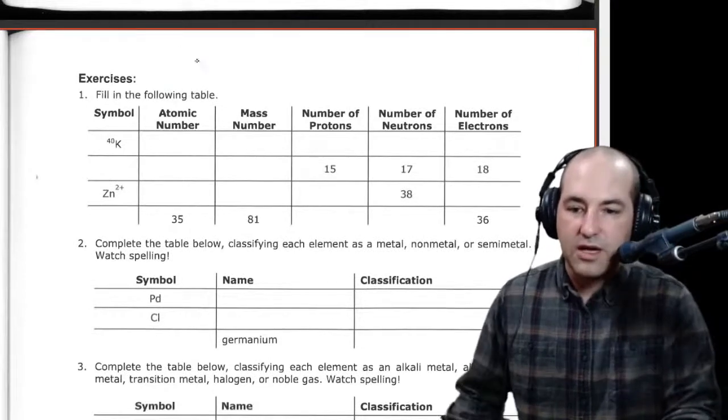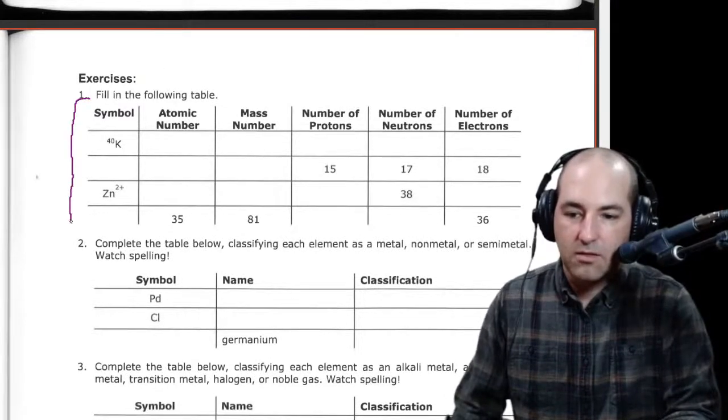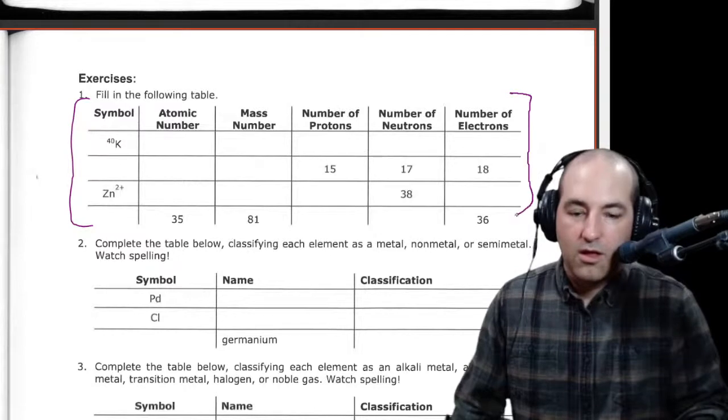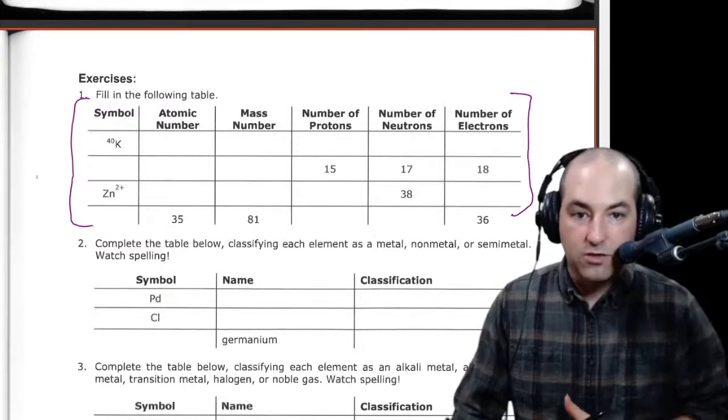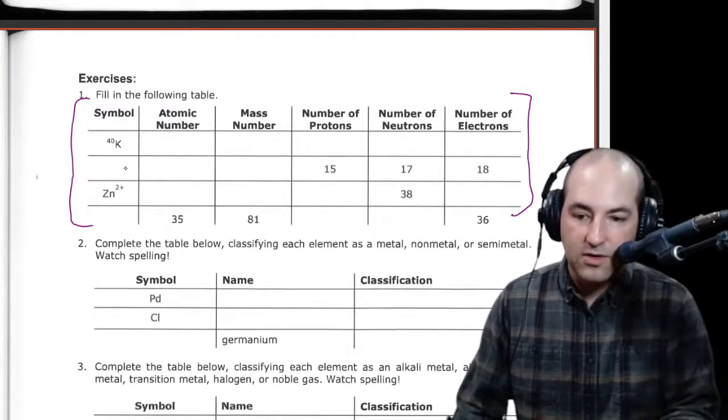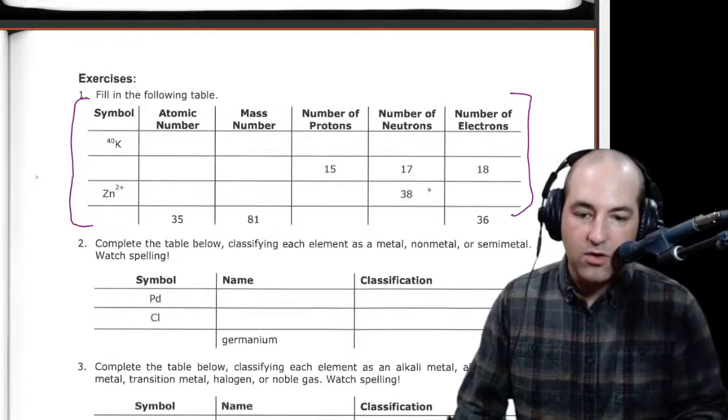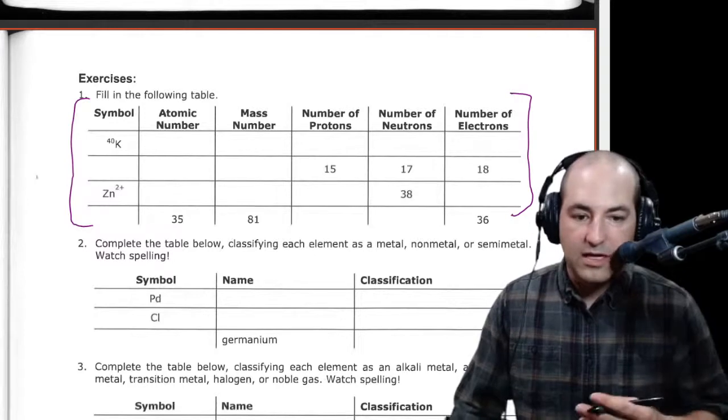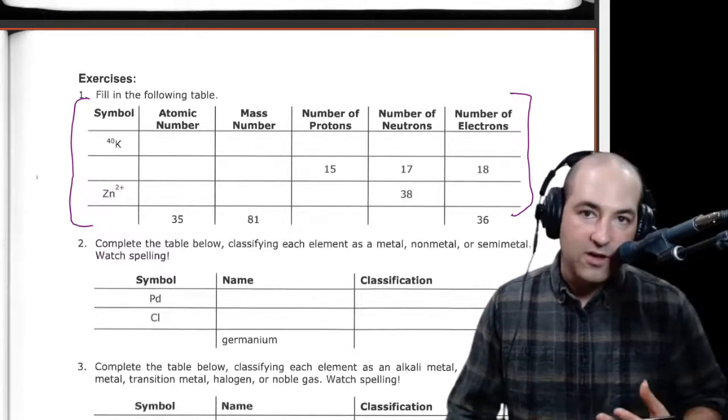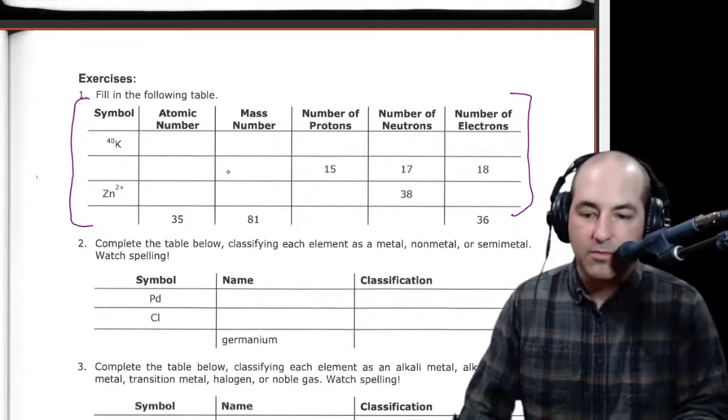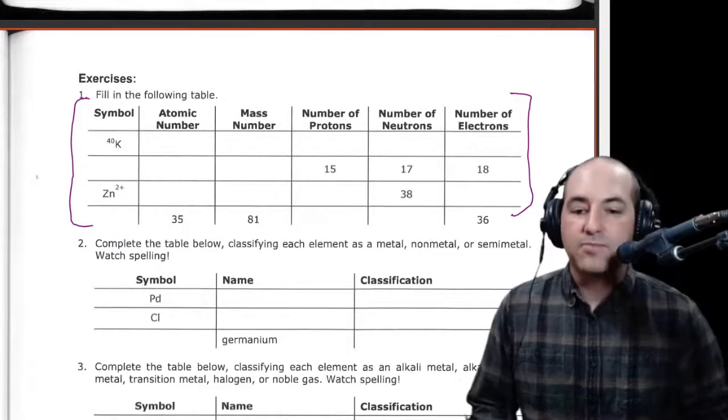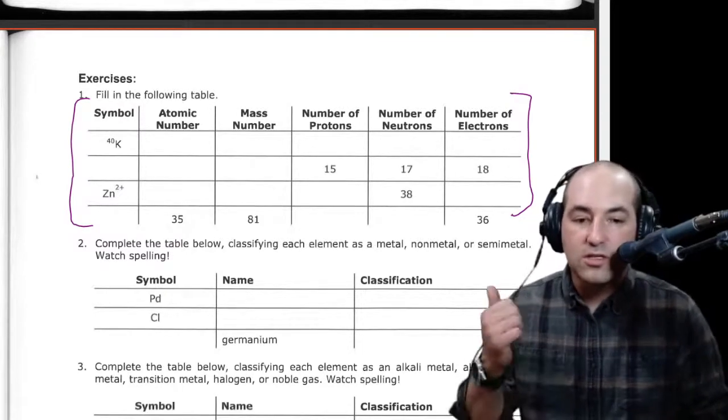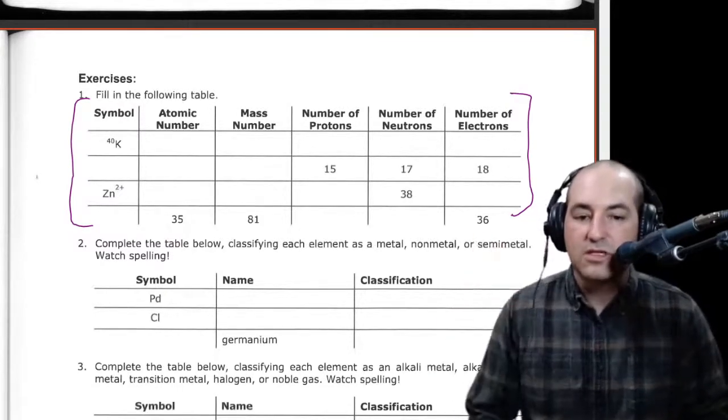So I want to especially highlight right here. This is what I really want you to be able to do from this. So if you're given a symbol with a mass number, or you're given some numbers of protons, neutrons, and electrons, can you figure out the rest? Can you figure out the symbol? Can you figure out the charge? Can you figure out the mass number? Whatever you need to figure out. Can you do that? So this is really kind of use this as like a test.